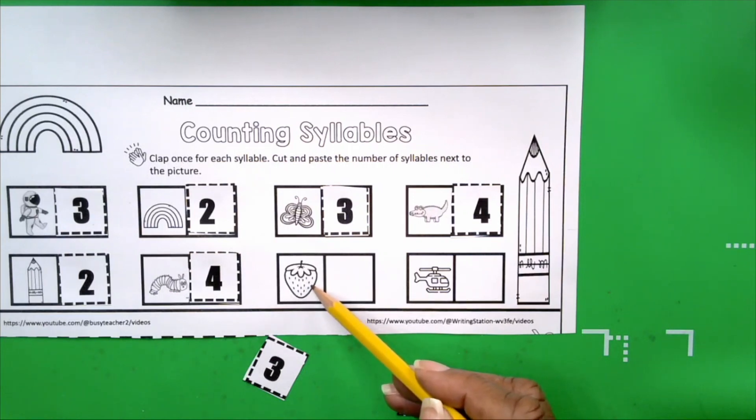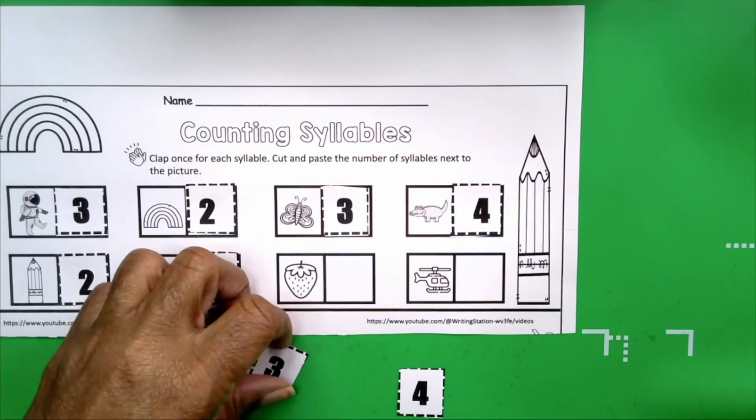Let's just take a look at our next picture. What is the word for this picture? Strawberry. Get your hands ready. Strawberry. How many claps? Three. How many syllables in strawberry? Three. Very good.